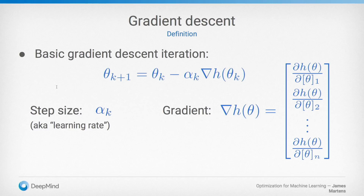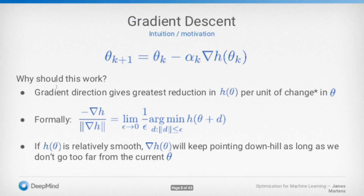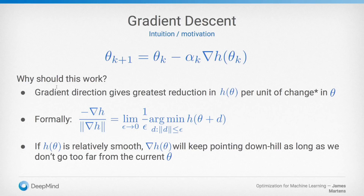Why should this work? The gradient direction is essentially the direction of greatest reduction in the objective function per unit of change in theta. This is why it's also called steepest descent. You could phrase this formally: the gradient, properly normalized, is the vector whose norm is less than epsilon that minimizes the objective function, as this equality holds as epsilon goes to zero. So if h is relatively smooth, the gradient will keep pointing downhill over some non-negligible distance, which is the key fact that makes gradient descent work. If the objective function suddenly changes or experiences a discontinuity, this whole strategy would be hopeless.